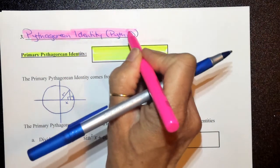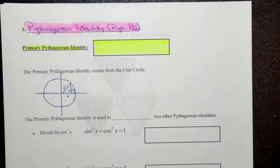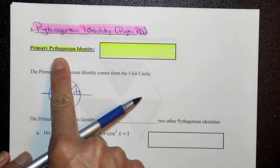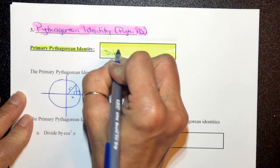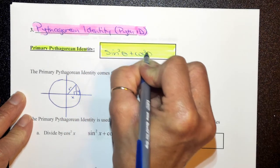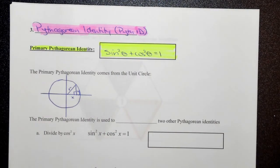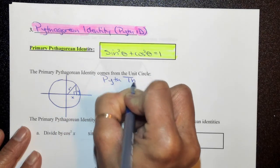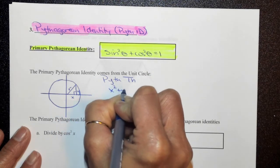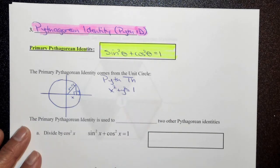I proved this for you back in Unit 1, but I'll go through a very short and brief derivation again. So the primary Pythagorean identity based on the Pythagorean theorem is sine squared theta plus cosine squared theta is equal to 1. The primary Pythagorean identity does come from the unit circle, and if we use the Pythagorean theorem, we have x squared plus y squared is equal to 1, because our radius for the unit circle was equal to 1.